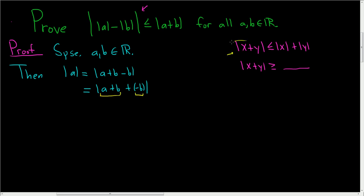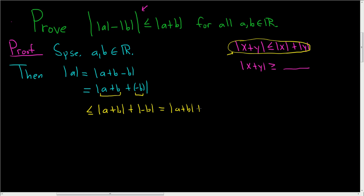Using the regular triangle inequality, this is less than or equal to the absolute value of a plus b, plus the absolute value of negative b. The absolute value of minus b is simply the absolute value of b. Now subtracting the absolute value of b from both sides gives us the absolute value of a minus the absolute value of b, less than or equal to the absolute value of a plus b.